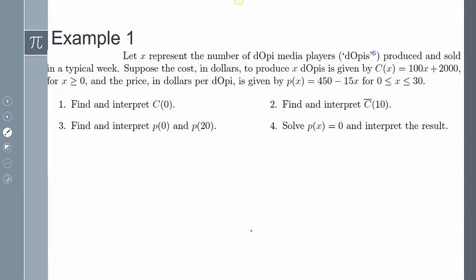Let's go over an example. It says, let x represent the number of DOP media players produced and sold in a typical week. Suppose the cost in dollars to produce x DOPs is given by C(x) equals 100x plus 2000, for x greater than or equal to zero, and the price in dollars per DOP is given by p(x) equals 450 minus 15x. And this is my domain for my price demand function.